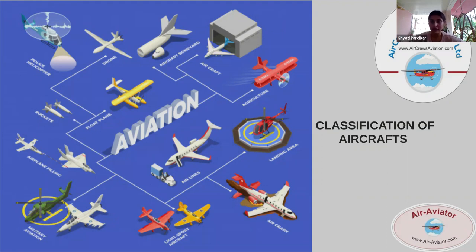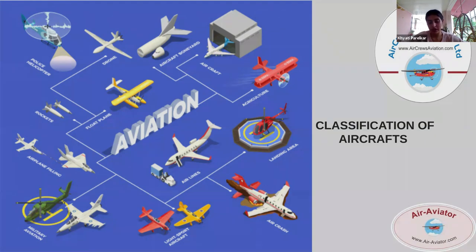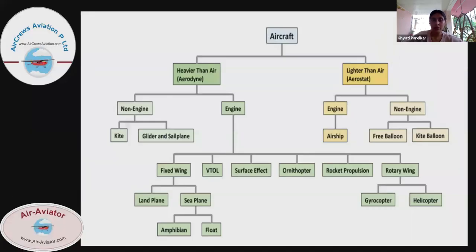Today we'll be discussing classifications of aircraft. Firstly, I would like to begin by saying what an aircraft is. An aircraft is any machine that can derive support in the atmosphere from the reactions of air, except the reactions that go against the surface of the earth.